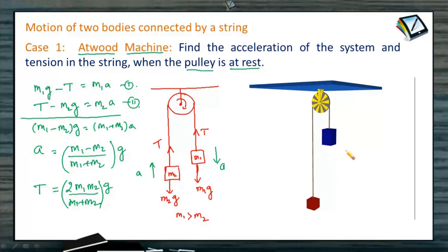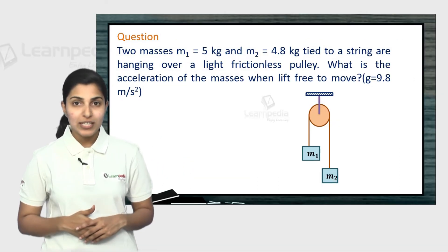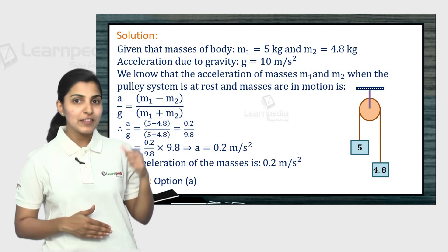So see here also in this case, this body is going to move down and as well as this body is going to move up. We can again see how the two bodies are in motion. So I think you have followed this Atwood machine where the acceleration of the system and tension in the string we have calculated when this pulley system is at rest. I hope you can now answer the question. Take a look at the solution here.